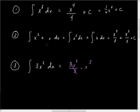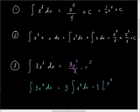So now, if I went ahead and brought the constant out, then I can say this is going to be 3 times the integral of x squared dx, which is equal to 3 times x cubed over 3. Those cancel out, and I'm left with x cubed.